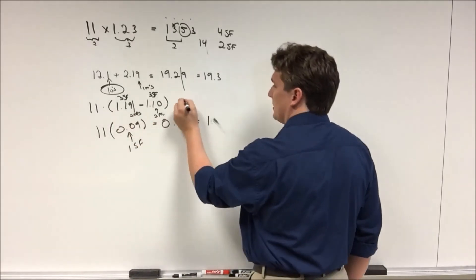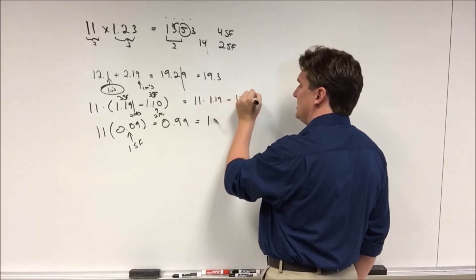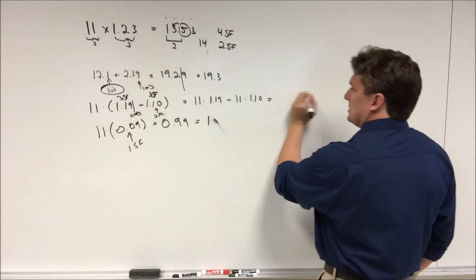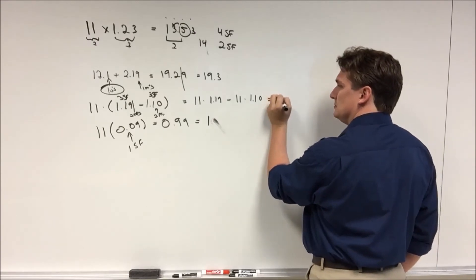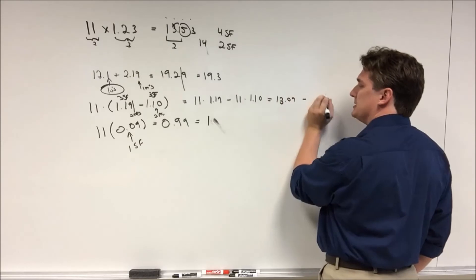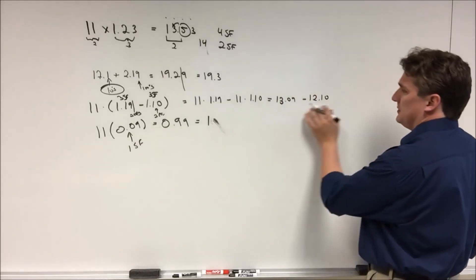However, if we distribute the 11, we'd have 11 times 1.19 minus 11 times 1.10 which will give us 13.09 minus 12.10 and this will give us an answer of 1.01.